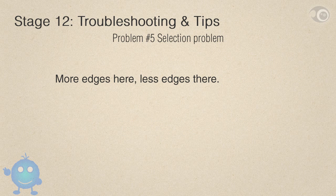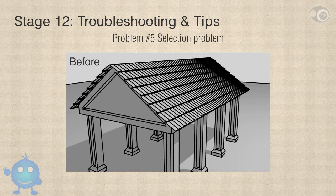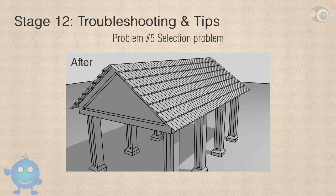Problem number 5: selection problem. This can go very deep — it's basically a fundamental object selection understanding problem. The common cause is an object that has more edges on some areas and less on other parts. Often the solution is to separate the mesh, make a new group selection of the separated object, and a new line set and line style. Here is a real case: a building with stylized poles and tiles on the roof, all in one object. When edged, the roof has too many details making lines too dense — the roof's lines run into a blob of color. To solve this, separate the roof and the poles, then assign a different line set and line style to each using group selection. This gives you better control of your lines.